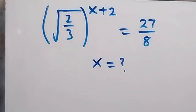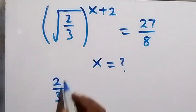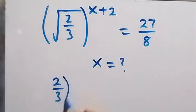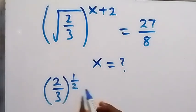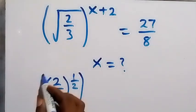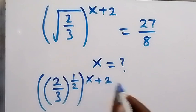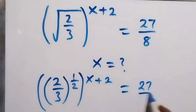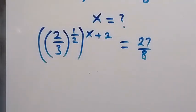Hello, you are welcome. We want to solve this algebra problem and find the value of x. Let's write the fraction 2 over 3 with square root as raised to power half, from the law of indices. So we have 2 over 3 raised to power half, then raised to power x plus 2, which equals 27 over 8.